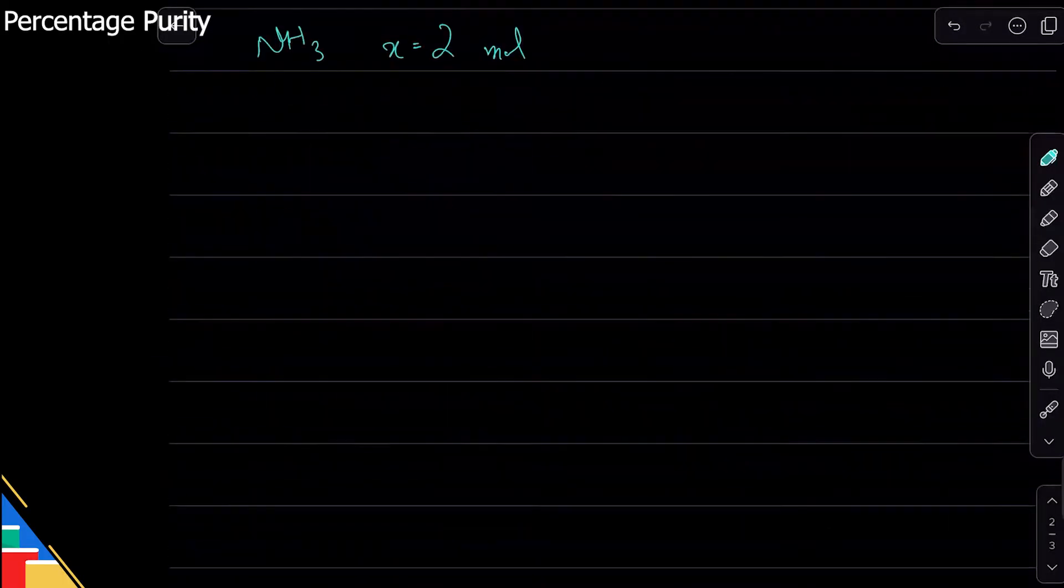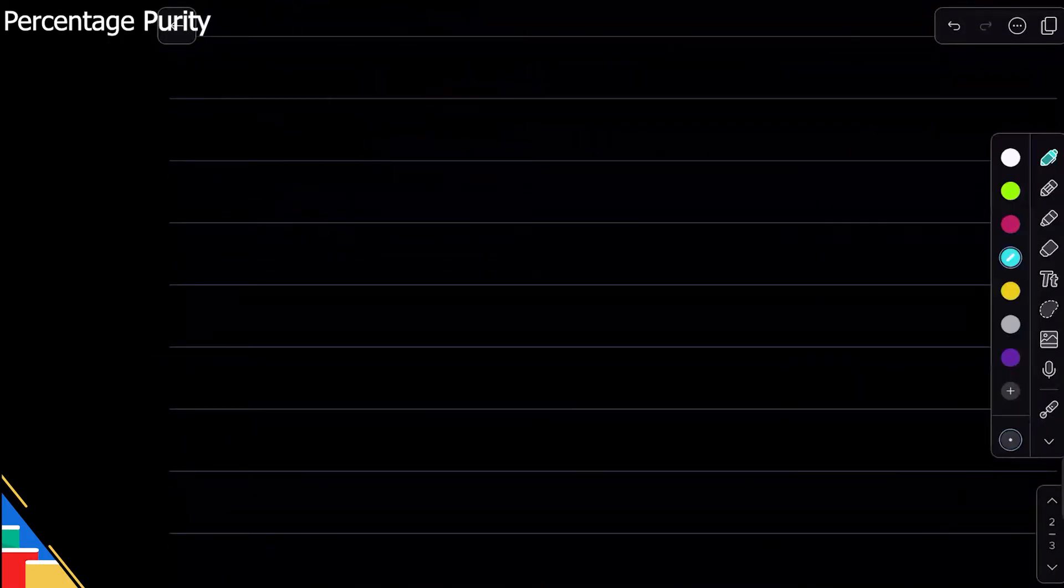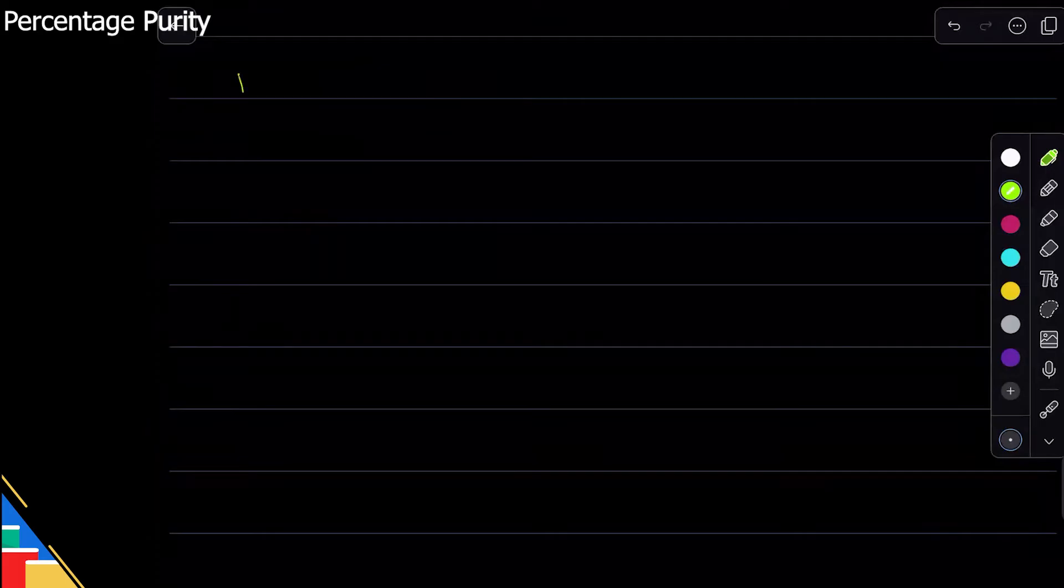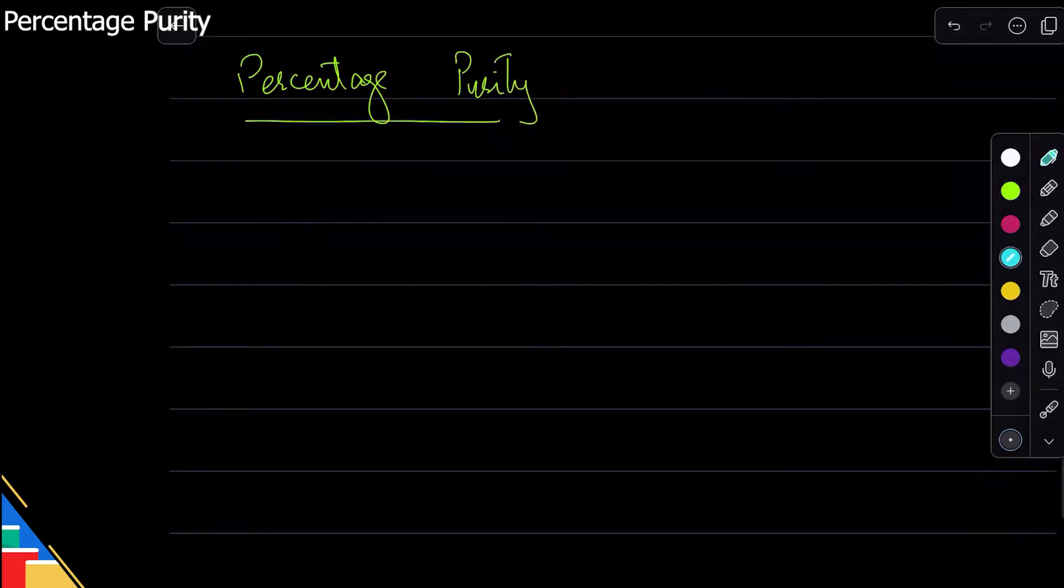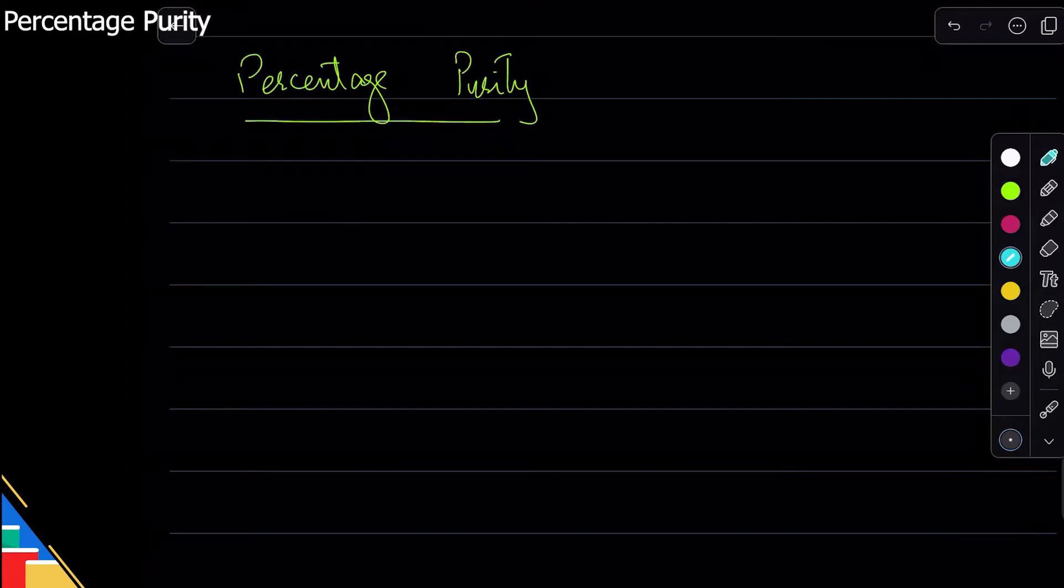Okay, so this is percentage yield. The second main concept that I wanted to do with you was percentage purity. Again, percentage purity is about how much you actually had compared to how much actually reacted.